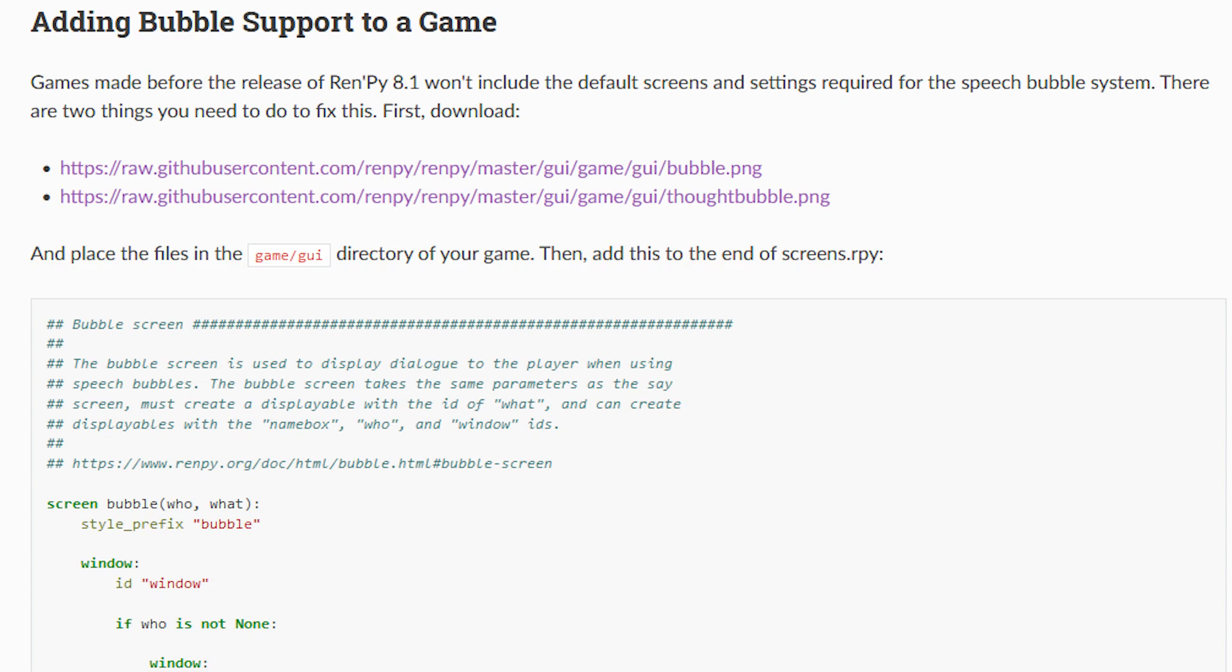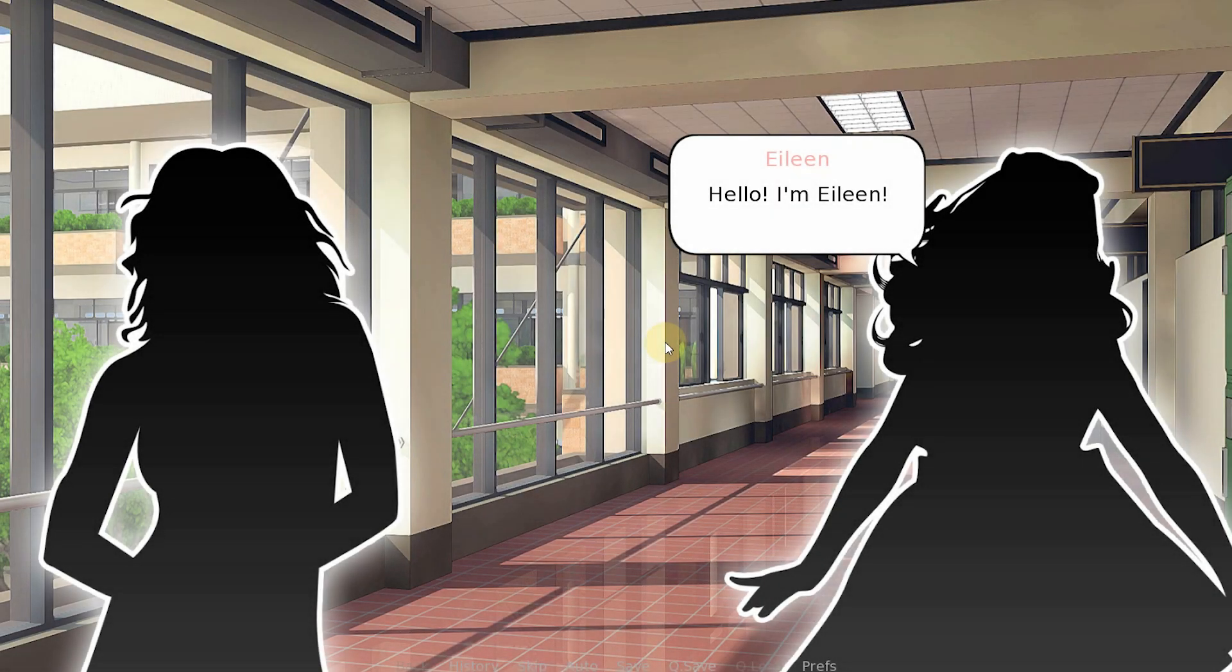If you have a game using an older version of Ren'Py that doesn't already have support for bubbles by default, you can add it yourself. To do this, you can visit the official documentation page, which I have linked to in the description box below, and scroll down until you see the heading 'Adding Bubble Support to a Game'. Then you simply want to follow the instructions.